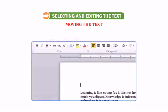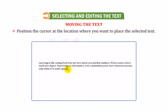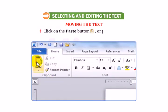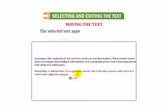The text disappears from the document and is temporarily placed on the clipboard. Position the cursor at the location where you want to place the selected text. Click on the paste button or press Ctrl plus V. The selected text appears at the desired location.